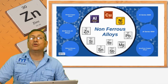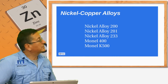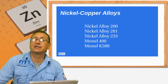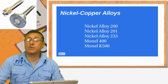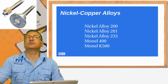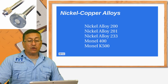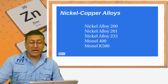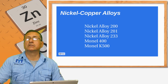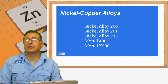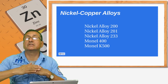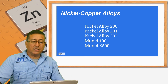Now we continue with nickel copper alloys. The famous Monel 400 is used for the fabrication of propeller shafts, and Monel K500 as well — both commonly used in shaft fabrication. Nickel alloys 200, 201, and 233 are also notable. Nickel inhibits corrosive properties and increases surface resistance.